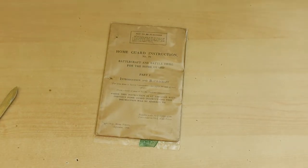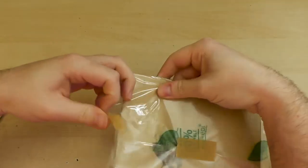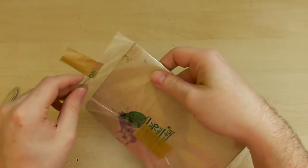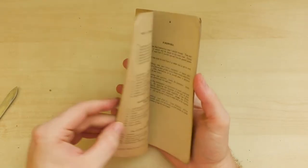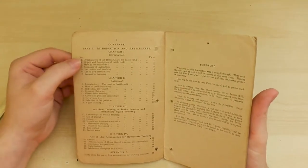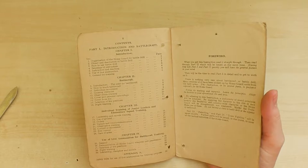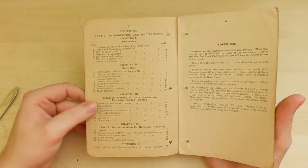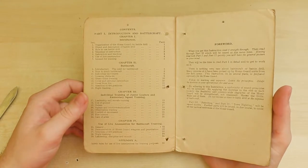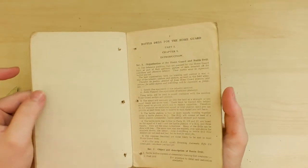This one is Home Guard Instruction number 51. And there's, I think there's almost 90 of these. Maybe more. I don't know. But this one covers battlecraft. So, we've got organization of Home Guard for battle drills, the object and description of a battle drill, use of live ammunition, ground for training, and then we have battlecraft, crossing obstacles, using cover, etc. Individual training of junior leaders, use of live ammunition, and then some safety procedures as well. So yeah, this is really interesting to look at. How the Home Guard was actually trained to fight the various actions that they expected to be fighting at various stages of the war.